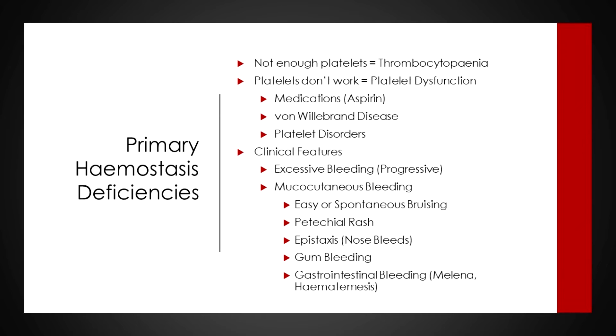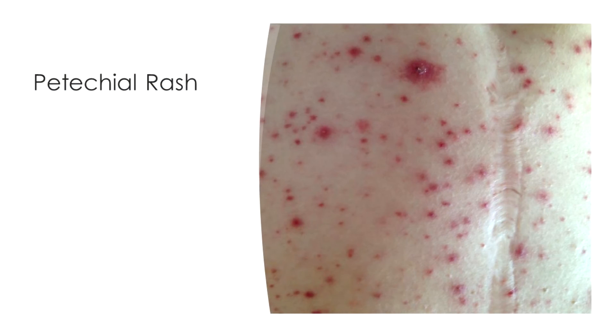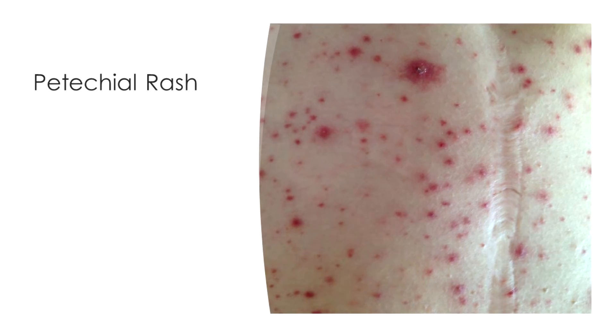Epistaxis — nosebleeding — is common in those with low platelet counts or von Willebrand's disease. Gum bleeding occurs because food scratches at the gums and the vascular endothelium is very close to the mucosal surface. Gastrointestinal bleeding can also occur, presenting with melena — digested blood from the upper GI appearing in the stool — or hematemesis, the vomiting of blood usually from a gastric source. The image here shows what a petechial rash looks like at high magnification: lots of small contained bleeding spots where capillaries have hemorrhaged.